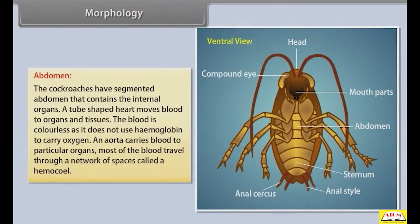The cockroach has a segmented abdomen containing the internal organs. A tube-shaped heart moves blood to organs and tissues. The blood is colorless as it does not use haemoglobin to carry oxygen. An aorta carries blood to particular organs, and most of the blood travels through a network of spaces called a haemocoel.